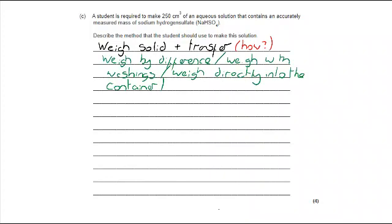First of all, we're going to weigh the solid and transfer, but we need to specify how. There are different ways: you might weigh by difference, weighing the weighing boat plus solid and then the weighing boat plus any residue after transfer. You might weigh it and then do washings, or weigh directly into the container. From there, we've got our solid and we're making a solution, so we're going to dissolve it, but we dissolve in the minimum volume of water. It's important that we don't go to the full 250 because we've got to deal with other things later, like washings and transfer.